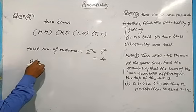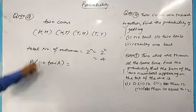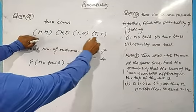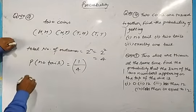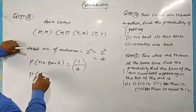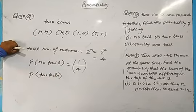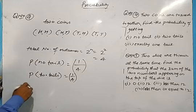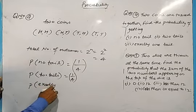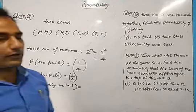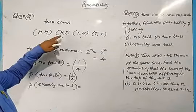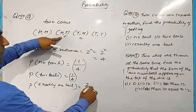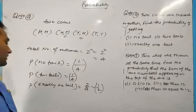We need to find the probability of getting no tail — that is only the head-head condition, so 1 out of 4. Probability of getting 2 tails is also 1 upon 4, since only tail-tail satisfies this. For exactly 1 tail, the conditions are head-tail and tail-head — that gives 2 favorable outcomes out of 4, so probability is 2 upon 4, which equals 1 by 2, meaning 50% chances of getting exactly 1 tail.